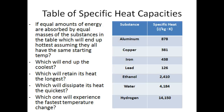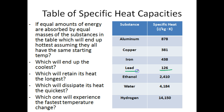Now we have a table of substances with their specific heat capacities expressed in joules per kilogram Kelvin. The question is: if equal amounts of energy are absorbed by equal masses of the substances, which will end up the hottest, assuming they all have the same starting temperatures? To answer this, we need to look at which substance has the lowest specific heat capacity. That's lead, with a specific heat capacity of 0.126. So if all these substances absorb the same amount of energy, the lead is going to end up the hottest — the highest temperature.